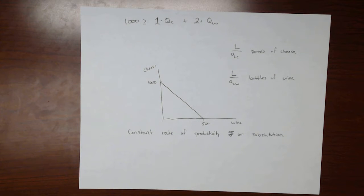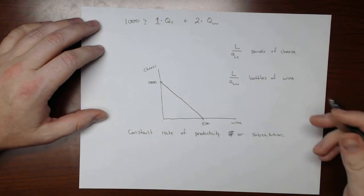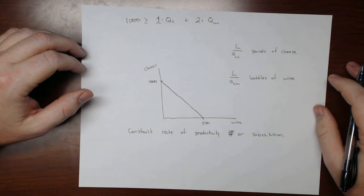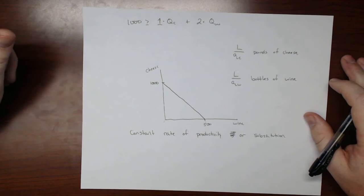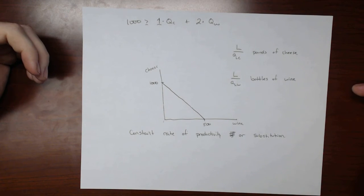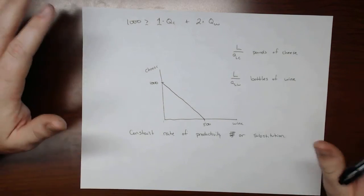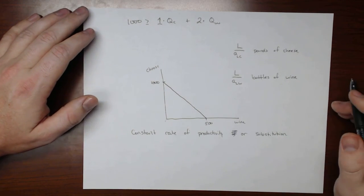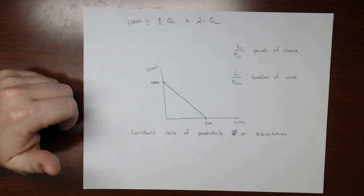So that's why the PPF in this particular case or in the cases that we've been describing is just a straight line because we're assuming constant returns to labor. We will relax that constraint in a couple lessons and go into something that's perhaps a little bit more realistic for the world. But for now, we're just doing straight lines, straight line PPFs or linear PPFs to make the lesson easier. We'll complicate things later on.